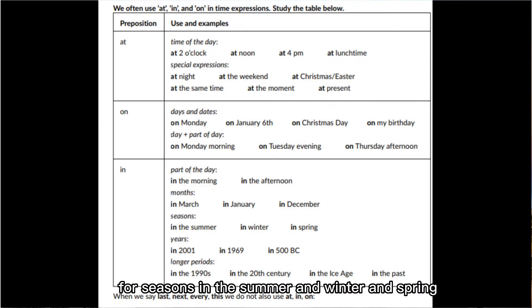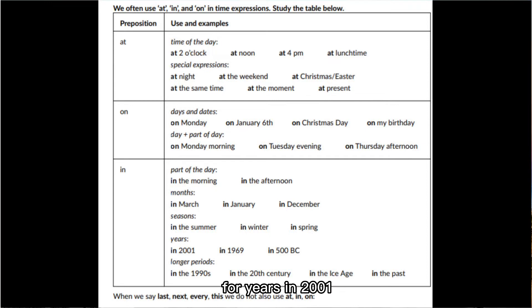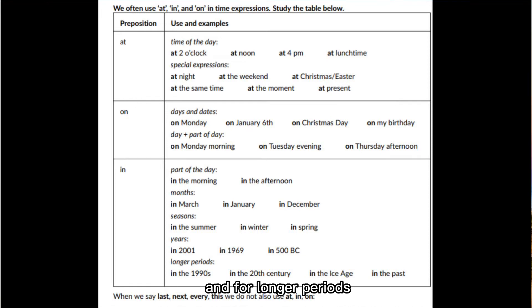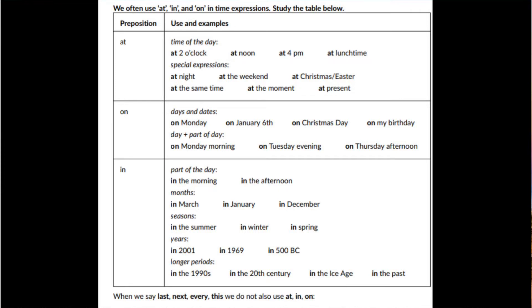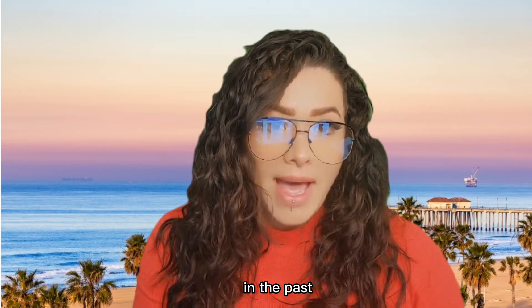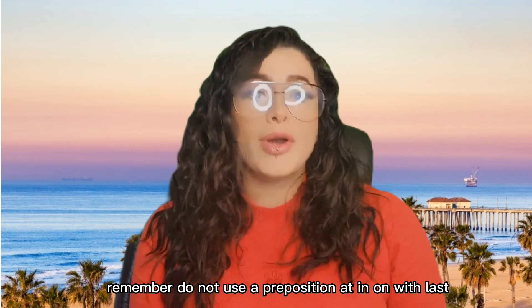We use 'in' for years: in 2001, in 1969, in 500 BC; and for longer periods: in the 1990s, in the 20th century, in the Ice Age, in the past months.